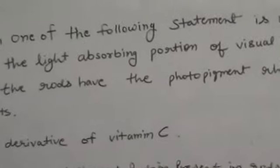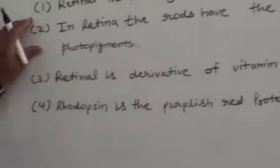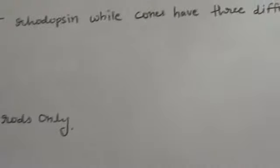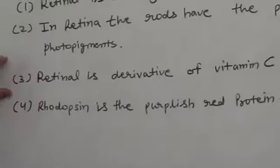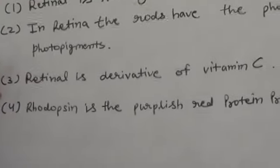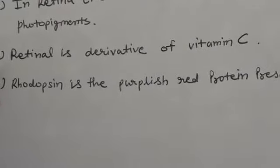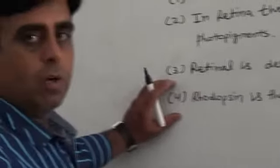First, retinal is the light absorbing portion of the visual photopigment. Second, in the retina, the rods have the photopigment rhodopsin, while cones have three different photopigments. Third, retinal is the derivative of vitamin C. Fourth, rhodopsin is the purplish red pigment present in the rods only.